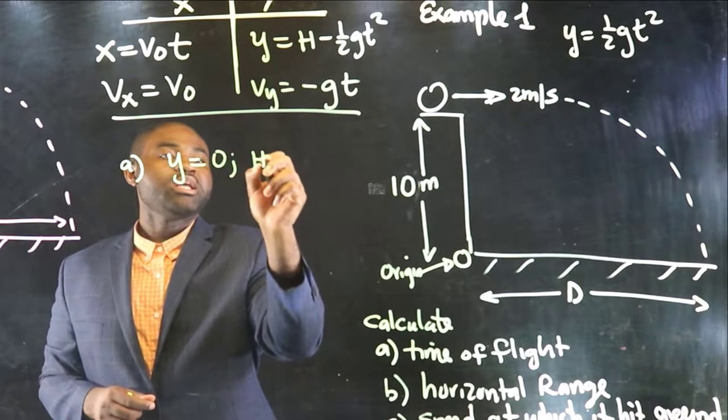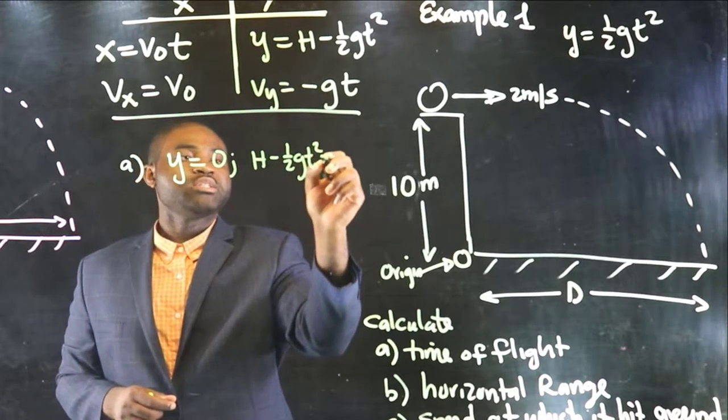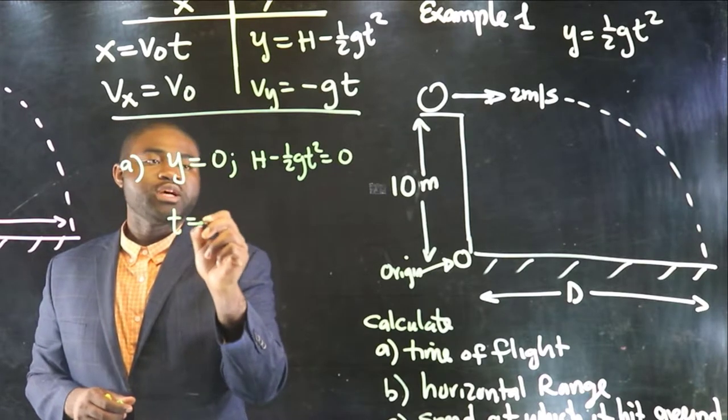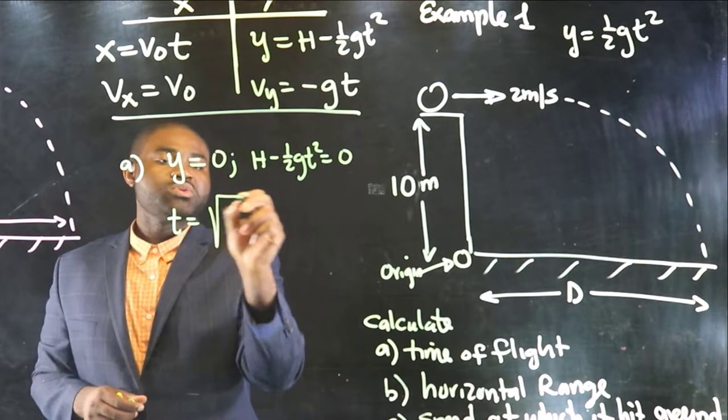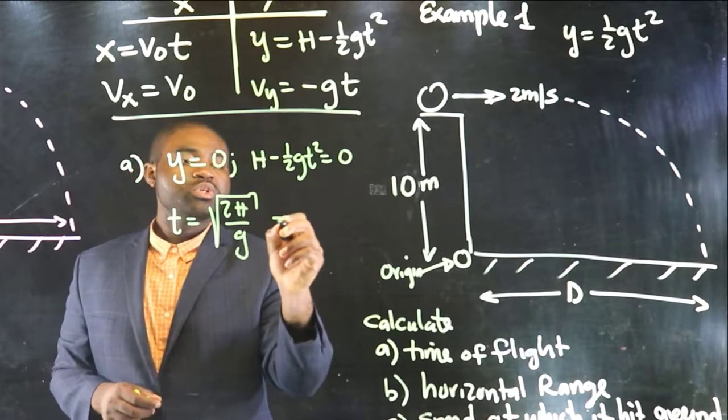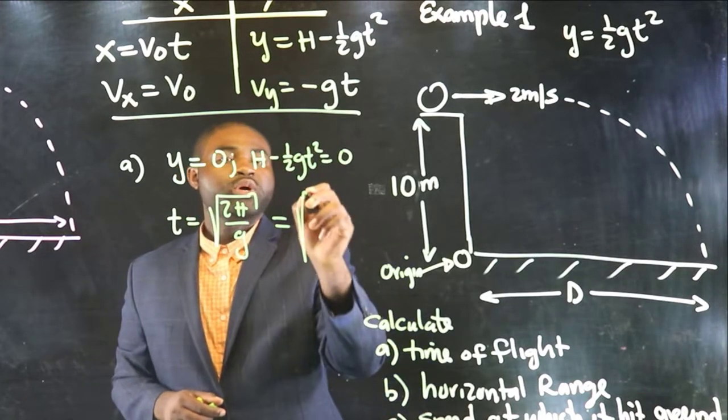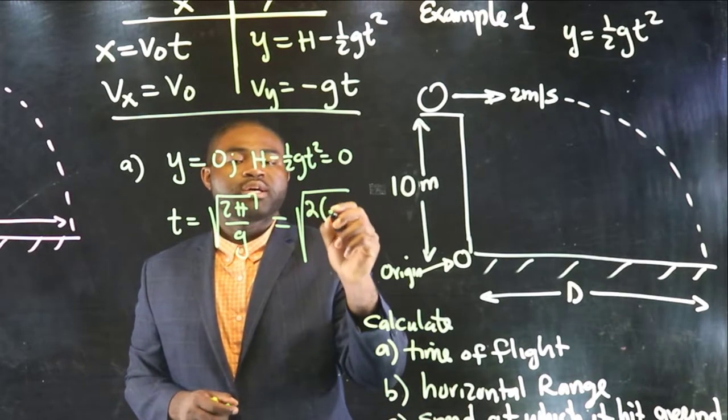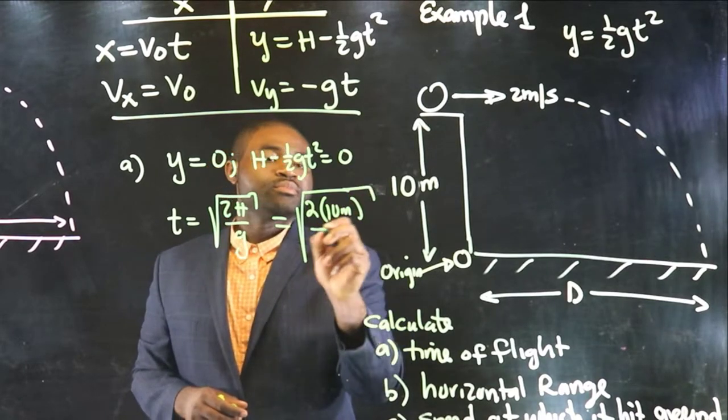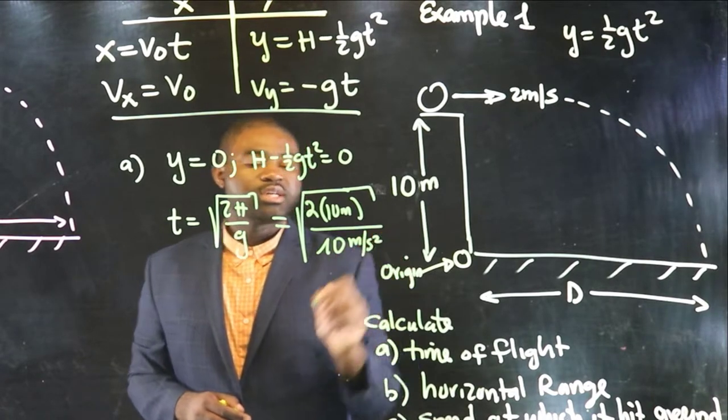That would mean that h minus one-half gt squared is equal to zero. Hence, the time of flight will be equal to the square root of 2h all divided by g. Which will be equal to the square root of 2h is 10 meters divided by g which I'm going to assume to be 10 meters per square seconds.